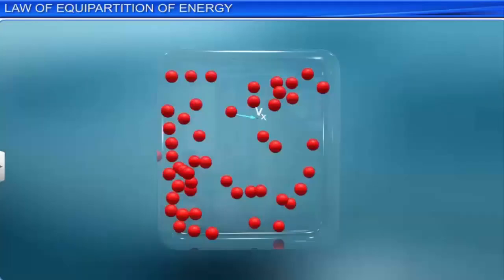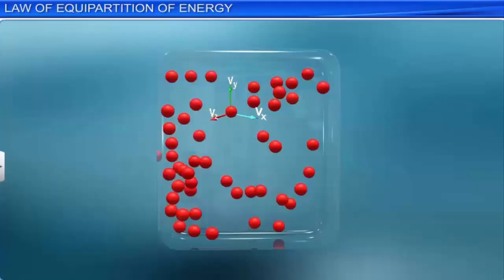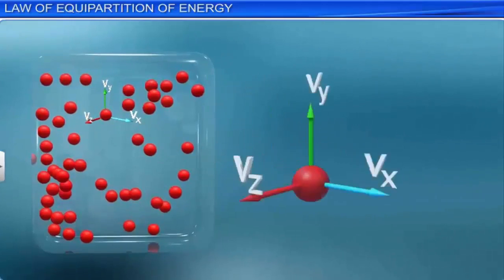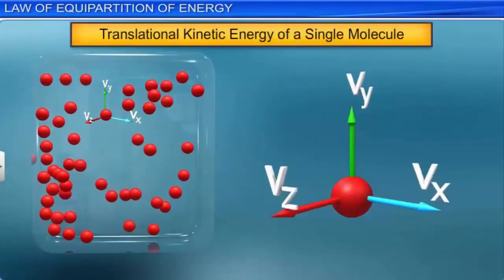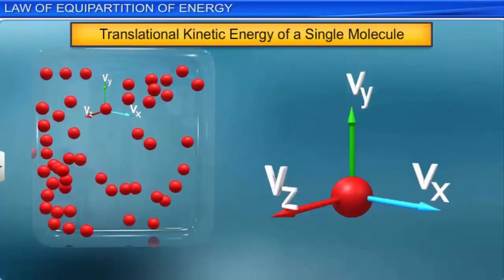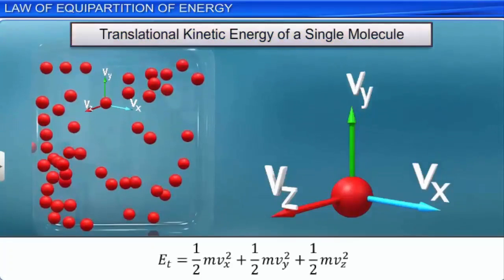Let Vx, Vy, and Vz be the velocities of a gas molecule along the x-axis, y-axis, and z-axis respectively. Then the translational kinetic energy of a single molecule is Et = (1/2)mvx² + (1/2)mvy² + (1/2)mvz².